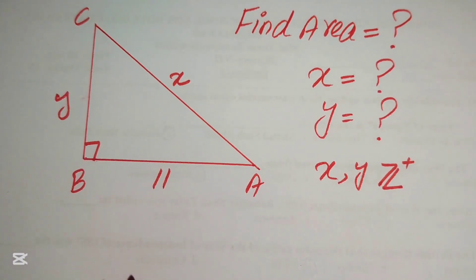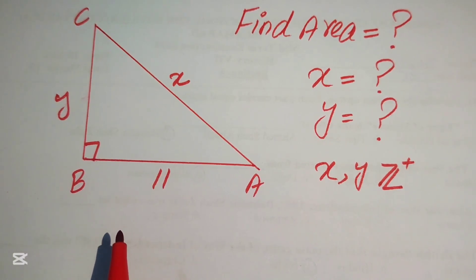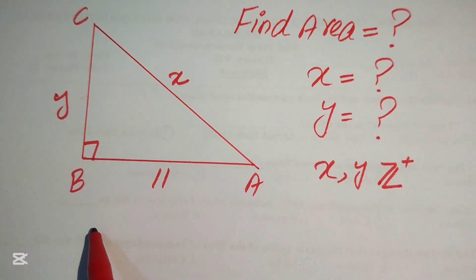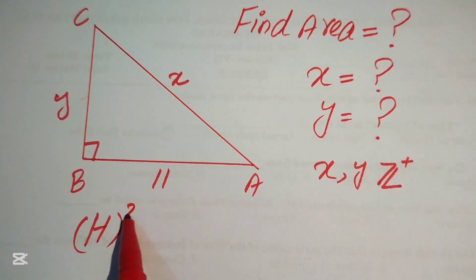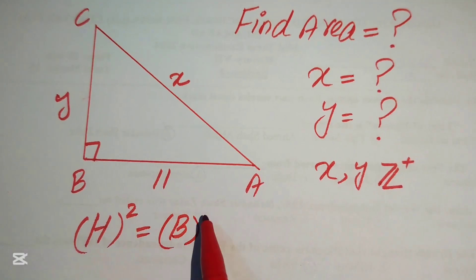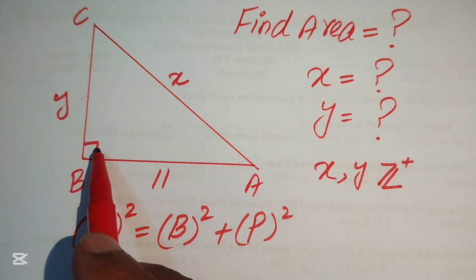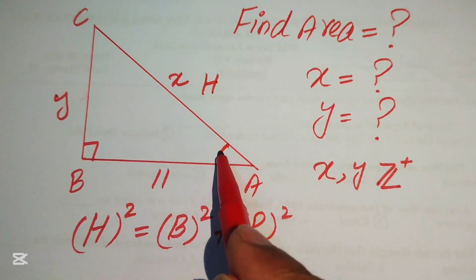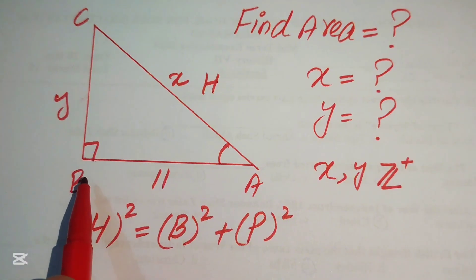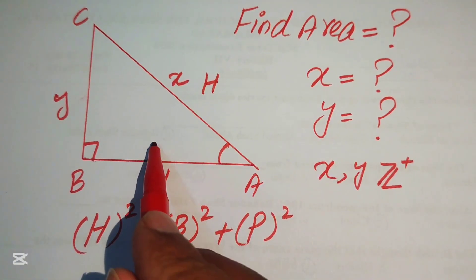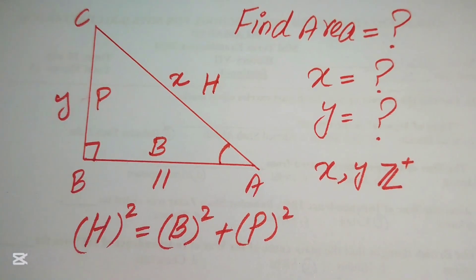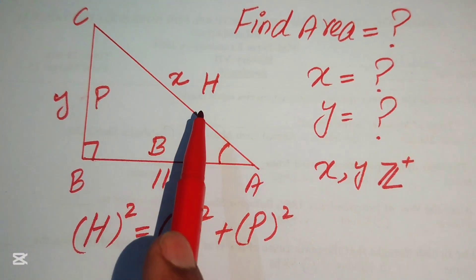The very first step is to apply the Pythagorean theorem to this right triangle. The Pythagorean theorem states that hypotenuse squared equals base squared plus perpendicular squared. In a right triangle, the side opposite the 90° angle is the hypotenuse, and the other two sides are the base and the perpendicular.